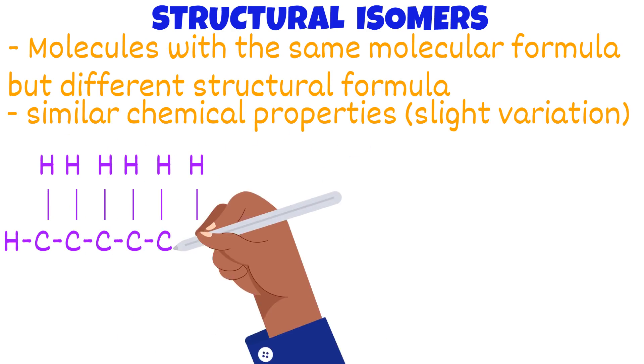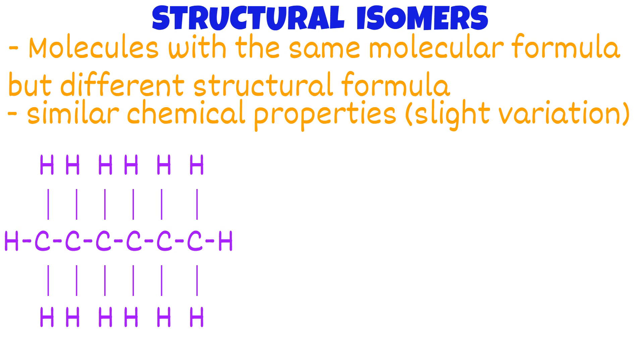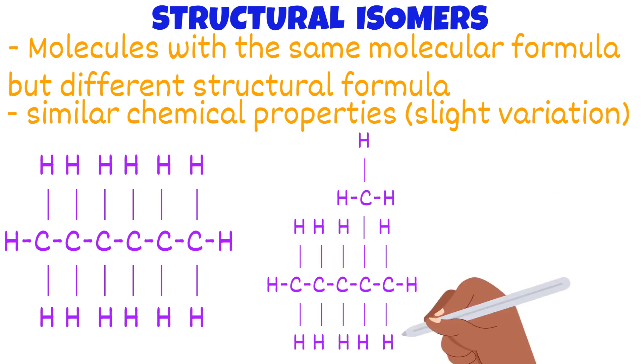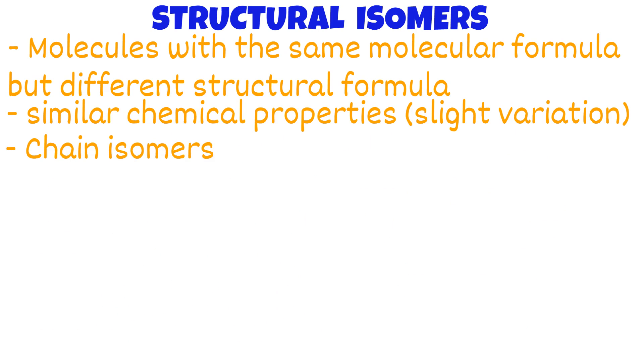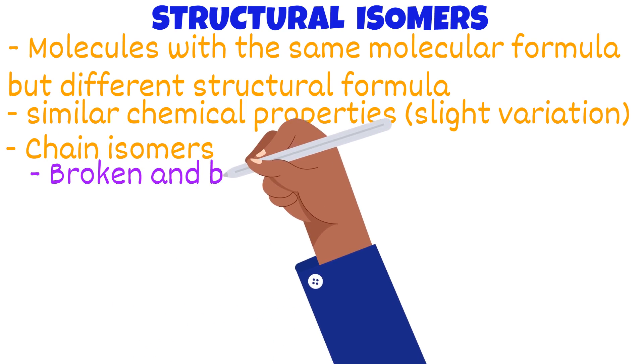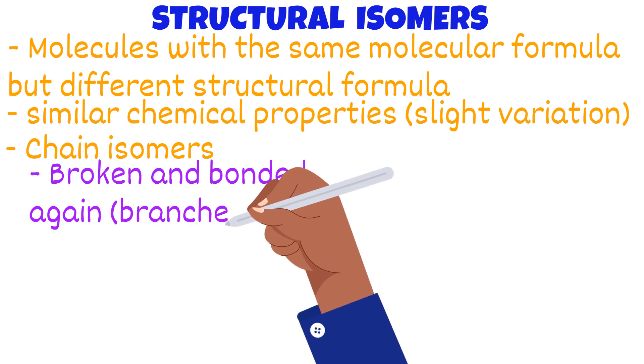Right now, this is hexane. An isomer of hexane would be 2-methylpentane. There are two types of structural isomers. Chain isomers, which is where the chain is broken and bonded again or branched.